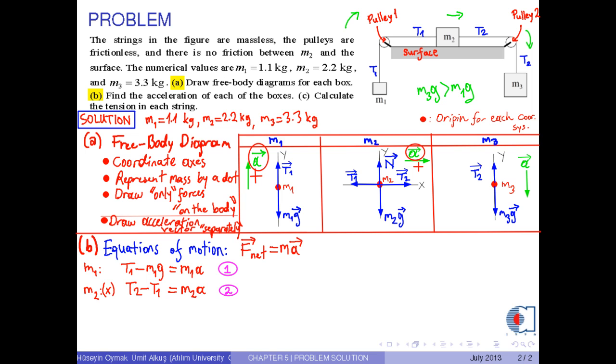Also, for the y-axis, since there is no motion along the y-axis, that is, AY equals 0, the equation of motion is written to be N minus M2 G equals 0. Then, N is found to be M2 times G.